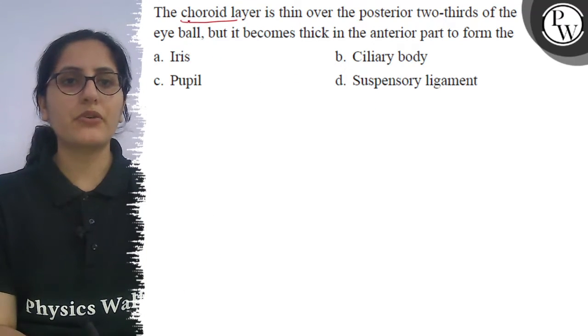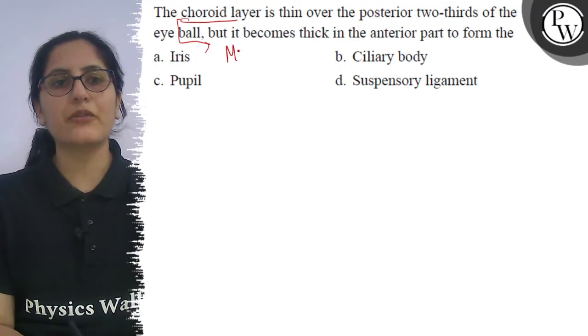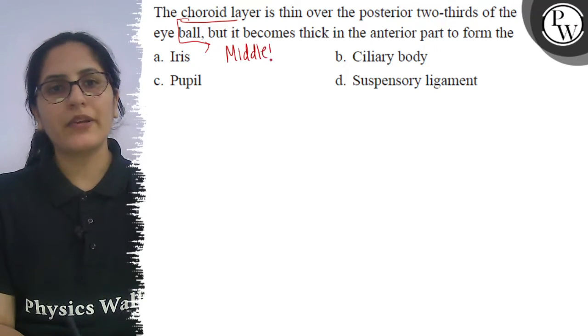Choroid layer - what is choroid? It is the middle layer of the eyeball.